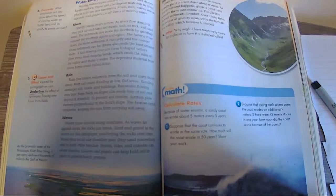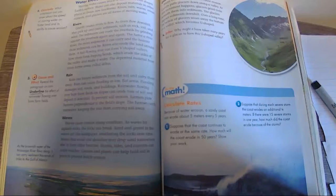Waves. Waves can cause erosion along coastlines. As waves hit against the rocks, the rocks can break. The sand and gravel in the waves act like sandpaper, weathering the rocks over time. Waves that erode one shoreline may drop sand somewhere else to form beaches.